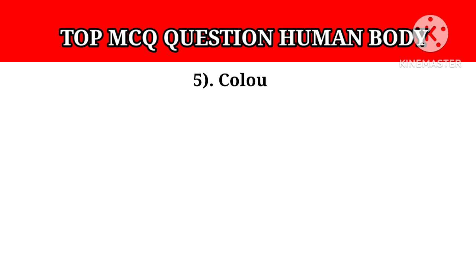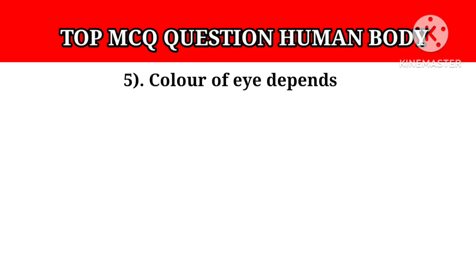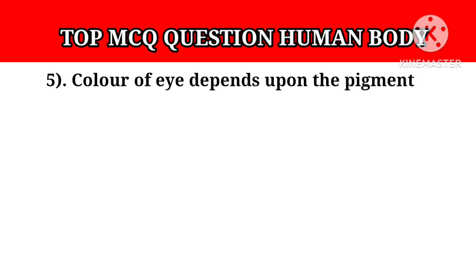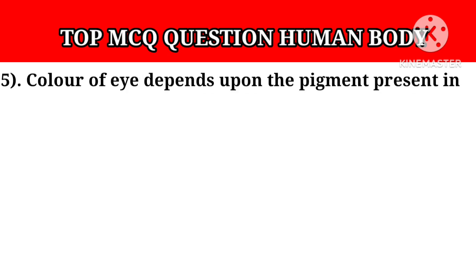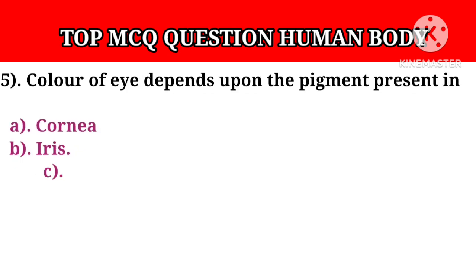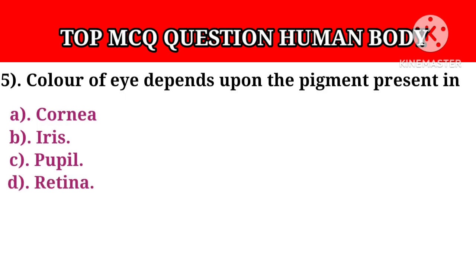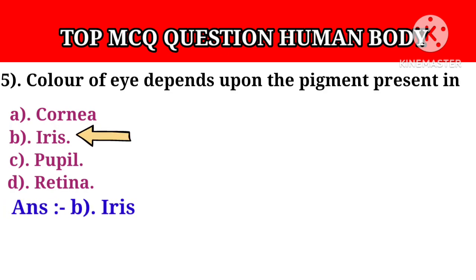Question number 5: Color of the eye depends upon the pigment present in? Option A: Cornea. Option B: Iris. Option C: Pupil. Option D: Retina. Answer B: Iris.